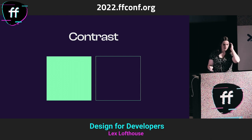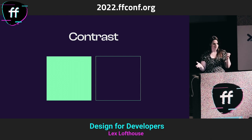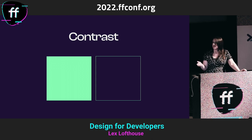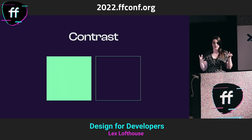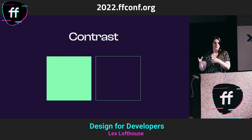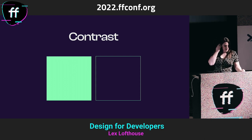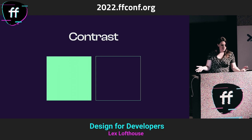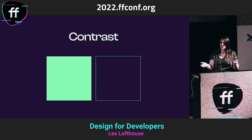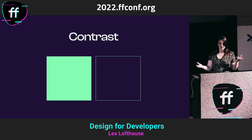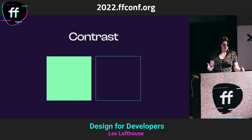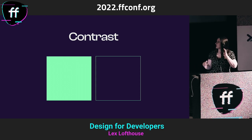Our third principle is contrast. Contrast is achieved by having things be opposite to each other — or close enough to appear opposite — in order to create a sense of emphasis. We can use contrast to draw the user's eye to a certain place on the page first, which relates back to the hierarchy principle. We can also use contrast as a crucial part of the UI for accessibility — using high contrast in colors makes text really easy to read. White text on a black background, or vice versa. We can use color, scale, and styles to create contrast.